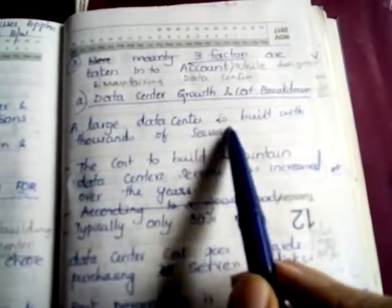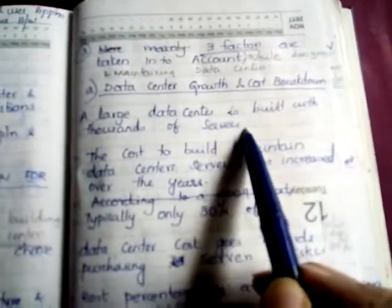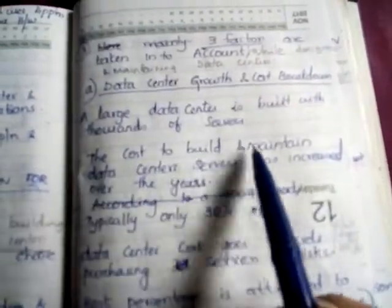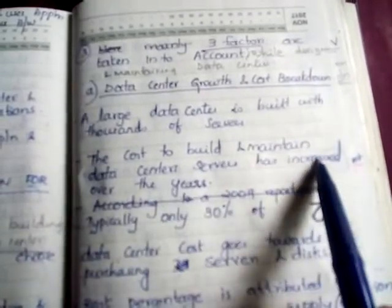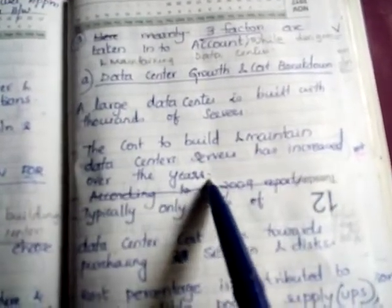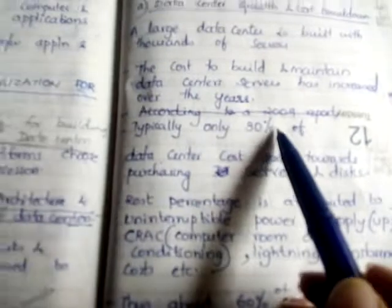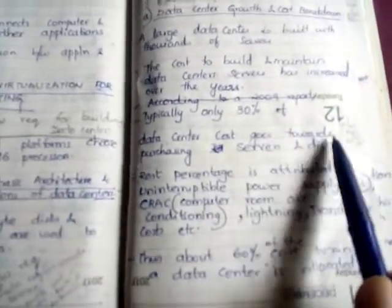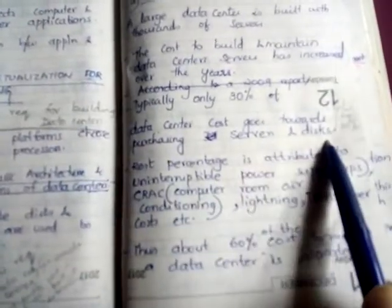A large data center is built with thousands of servers. The cost to build and maintain data center servers has increased over the years. Typically only 30 percent of data center costs go towards purchasing servers and disks.